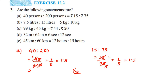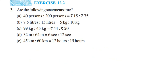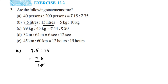The second question: 7.5 liters is to 15 liters is equal to 5 kg is to 10 kg. First, take 7.5 is to 15 and convert this into a fraction: 7.5 by 15. Now we need to do the cancellation.